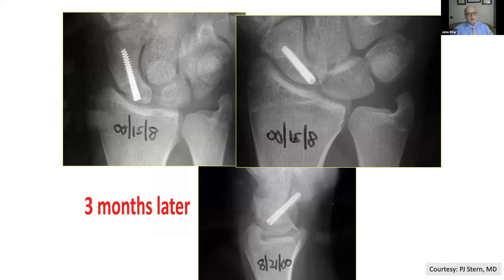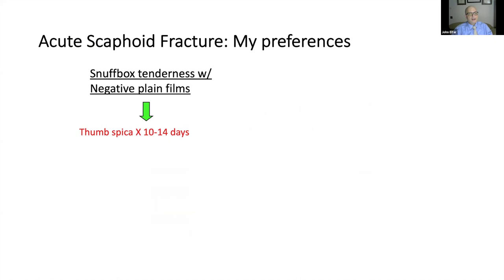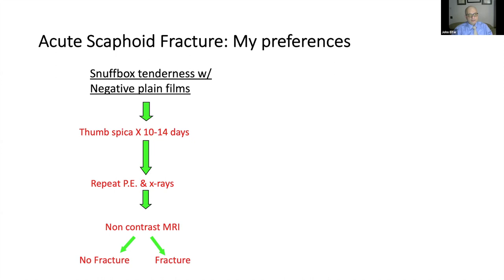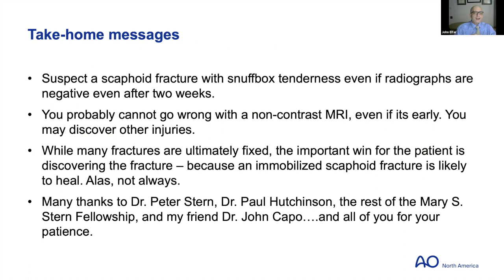For acute scaphoid fractures, the preference is to thumb spike patients straight out of the emergency room for a week or 14 days, repeat the physical exam and x-rays, and get an MRI if there's no evidence of fracture but the patient still has pain. Consider surgery if there's evidence of fracture and displacement. The take-home messages: suspect scaphoid fracture with snuffbox tenderness even if radiographs are negative, even after two weeks. You can't go wrong with a non-contrast MRI even if early, or a CT scan. You may discover other injuries on MRI. An immobilized scaphoid fracture is likely to heal, though not always.